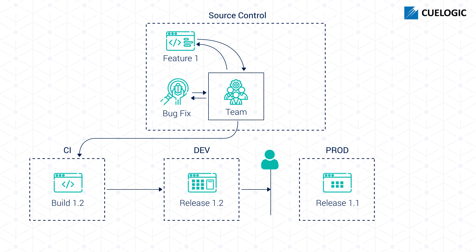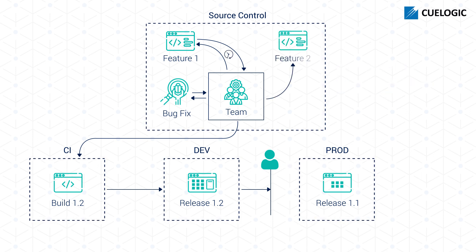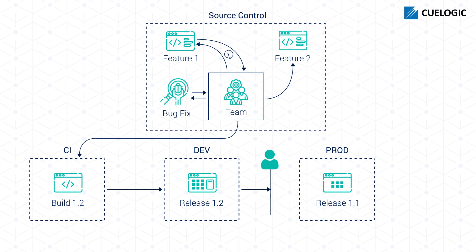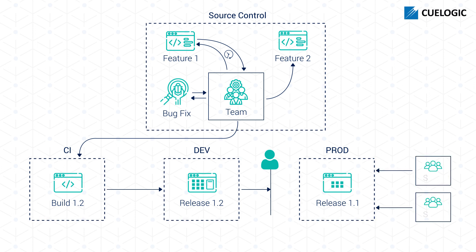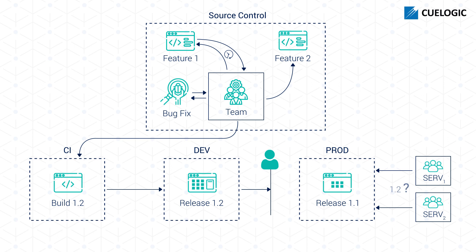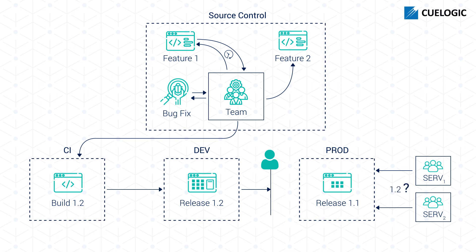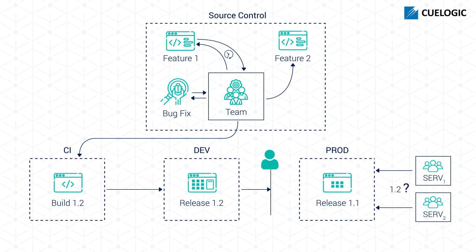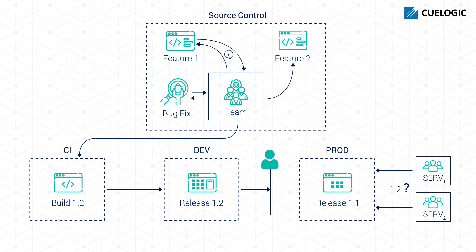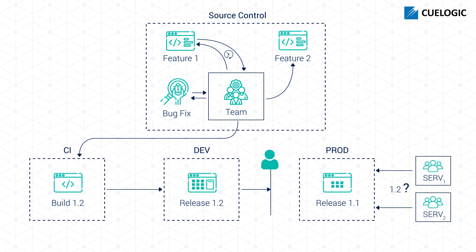So her team had paused there and had gone back to developing feature two. At the same time, others in the organization were dependent on feature one, which had not yet come through to production. In this vast world of continuous releases and feature delivery, this delay became problematic.